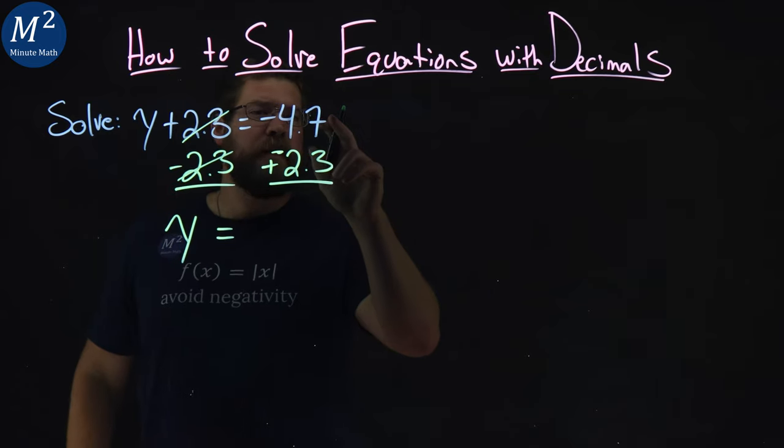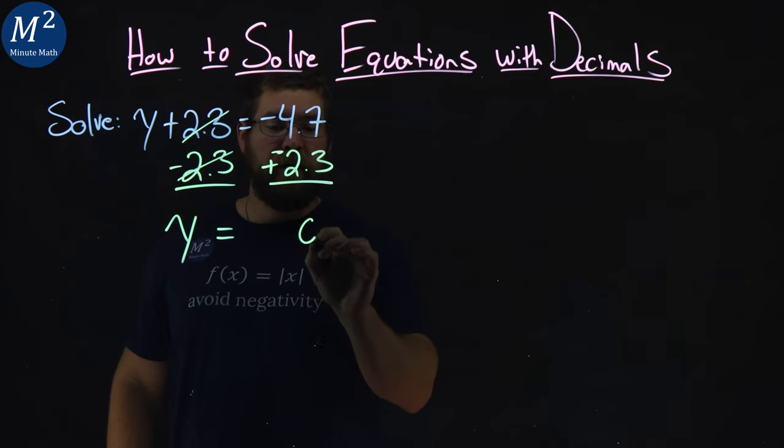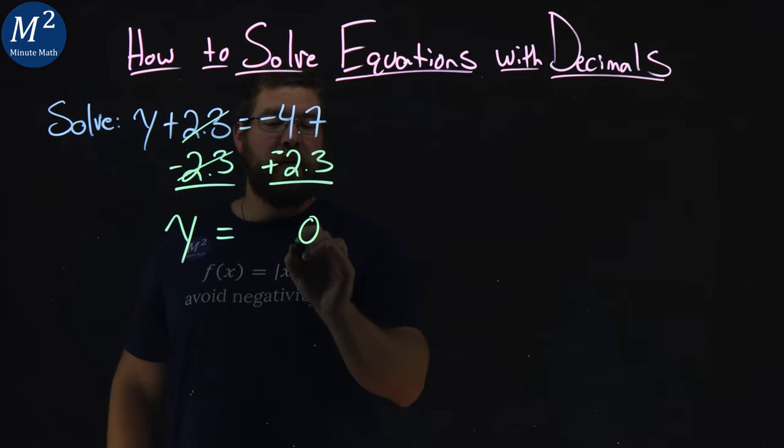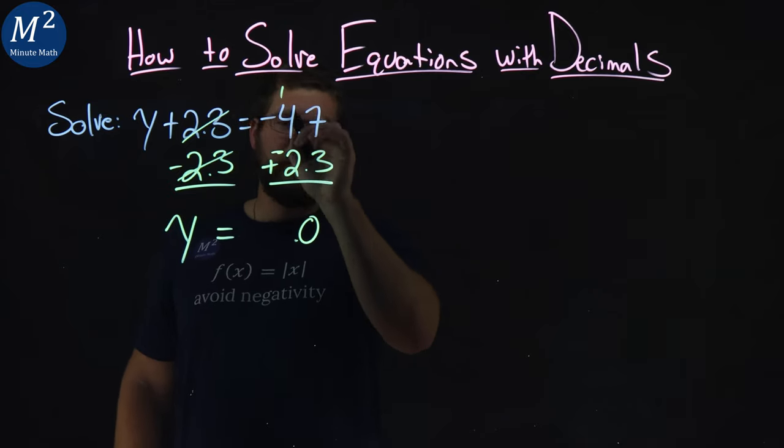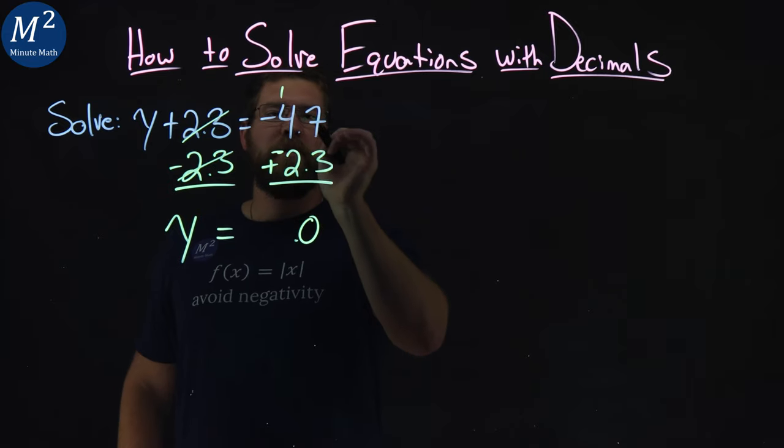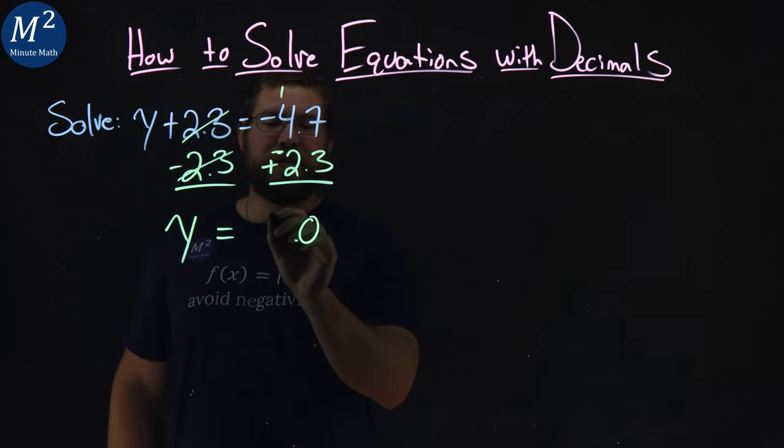So let's add it up. 3 and 7 becomes 10, 0 here, put the decimal in place, carry the 1. Then we have a negative 1, or ignore the negatives right now. 1 plus 4 is 5, plus 2 is 7.